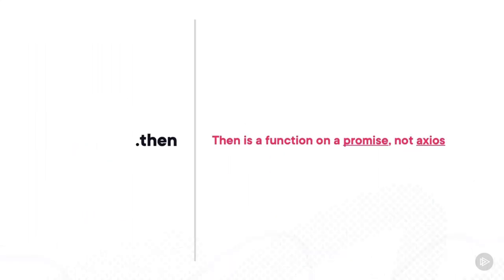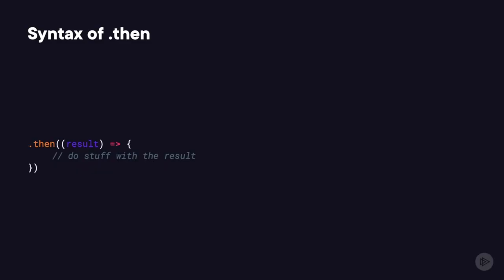To do that, we use a function named then. It's important to note that then is a promise function, not an Axios function — every time a promise is fulfilled and you want to handle that case, you'll use the then function. Then is a function that takes one parameter, and that parameter is also a function. The inside of that function will only get called when the promise succeeds. In some ways it's similar to the xhr.onload function — this is where we place code to be executed once our promise is fulfilled.